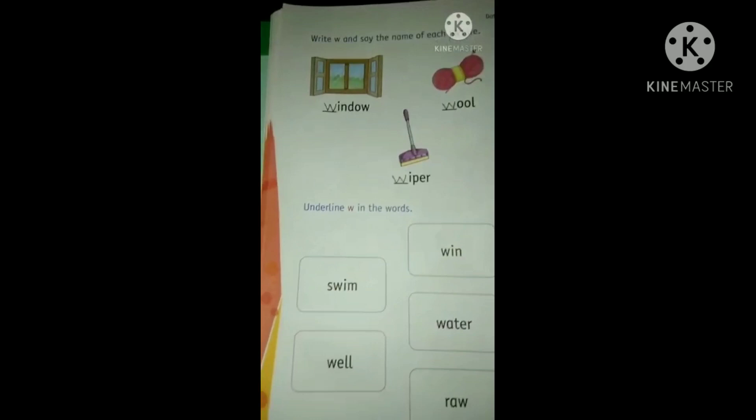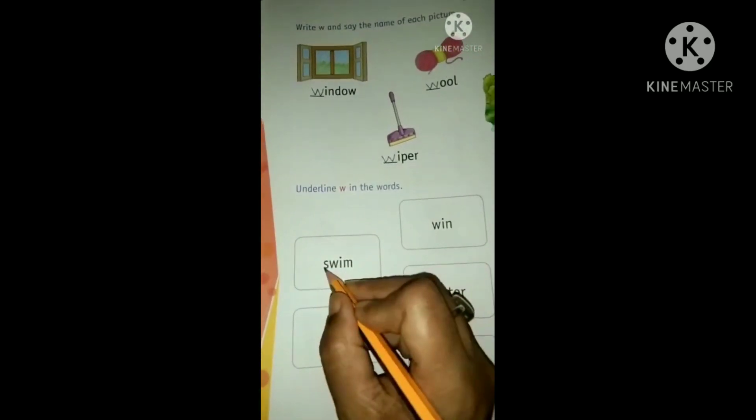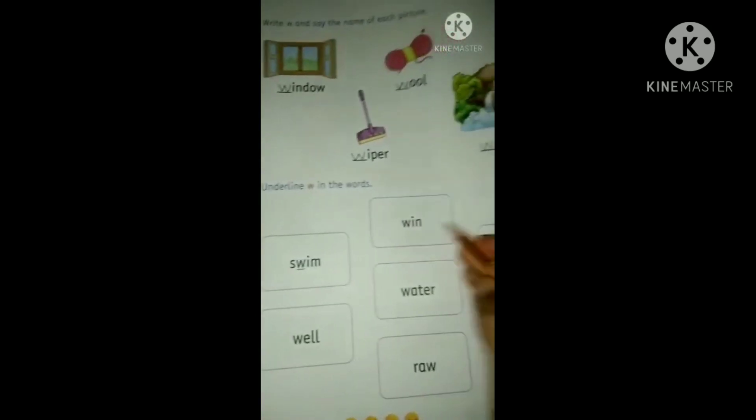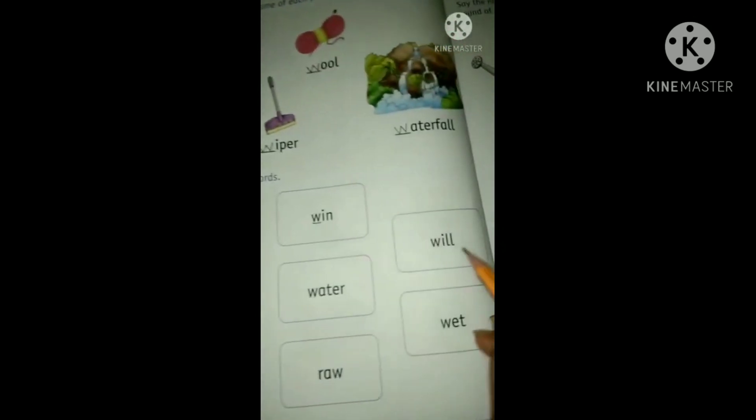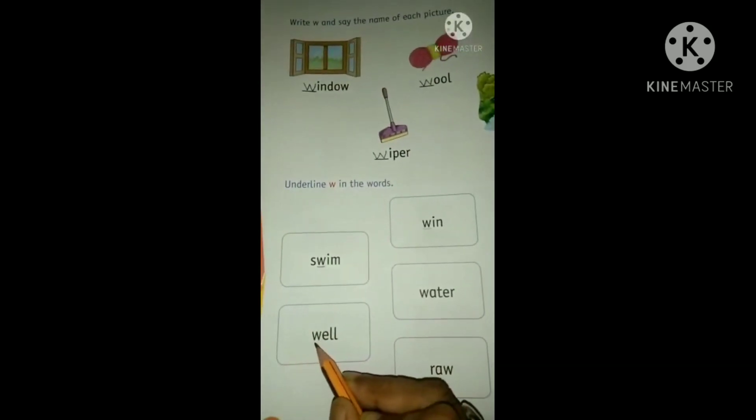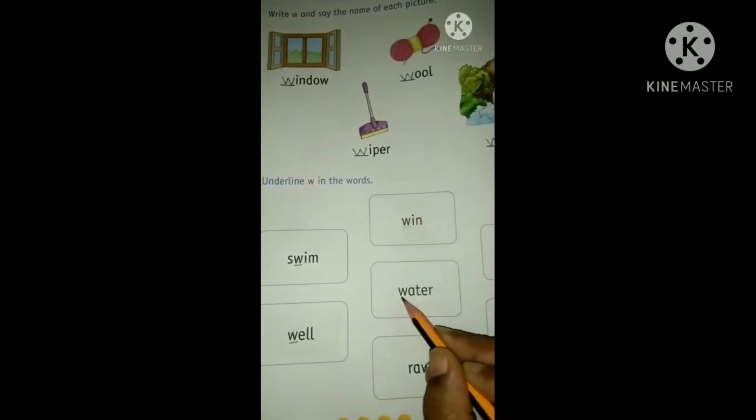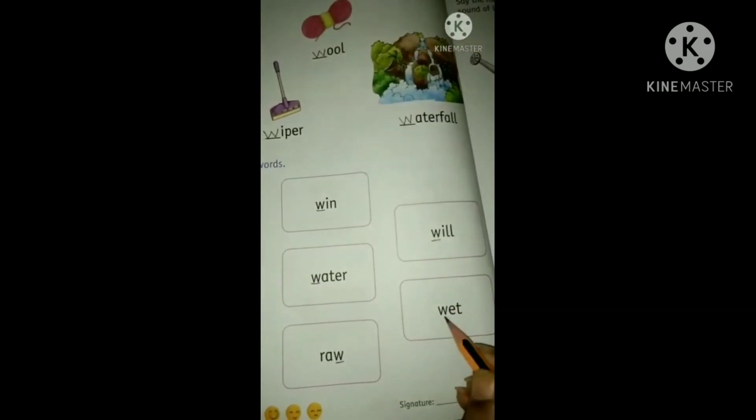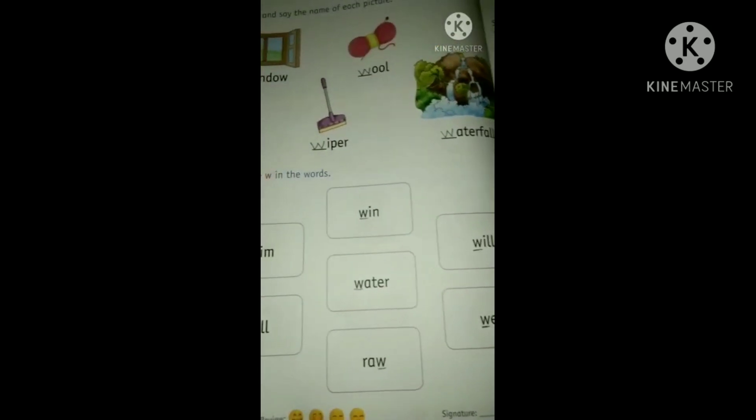Underline W in the words. Now we know, see, it's W. So, we will underline this. W, underline this. Now, W, underline this. W, W, W, and W. Done.